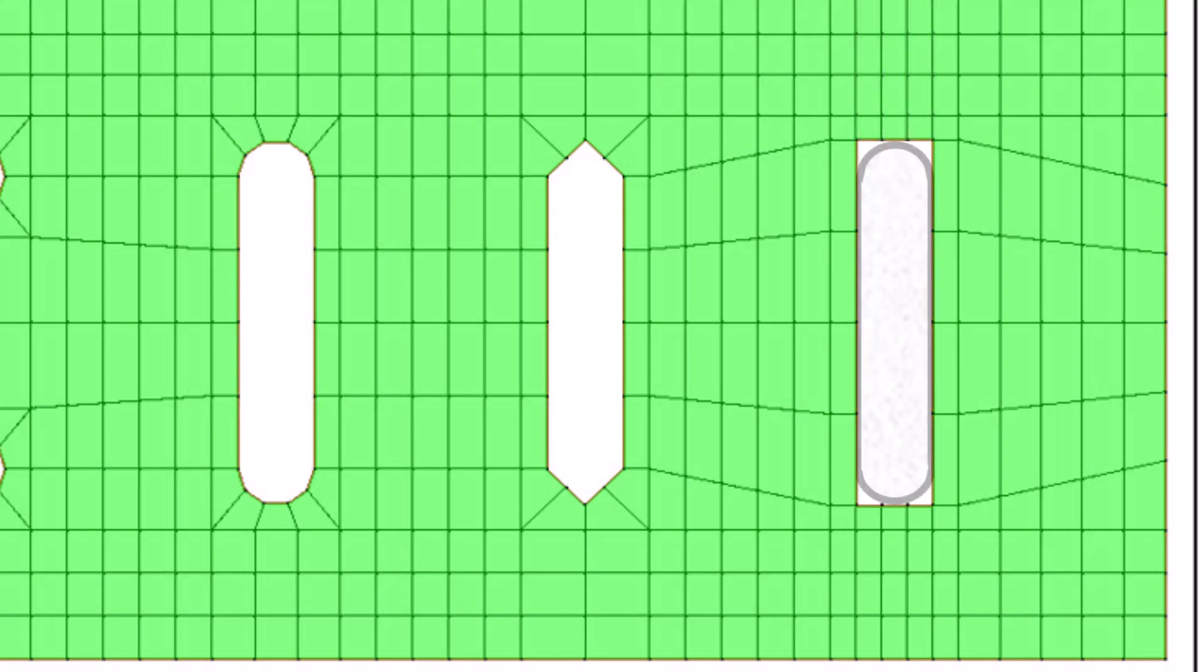It is reasonable to simplify pier shape using square elements to represent circular, round-nosed, or sharp-nosed piers within the mesh.